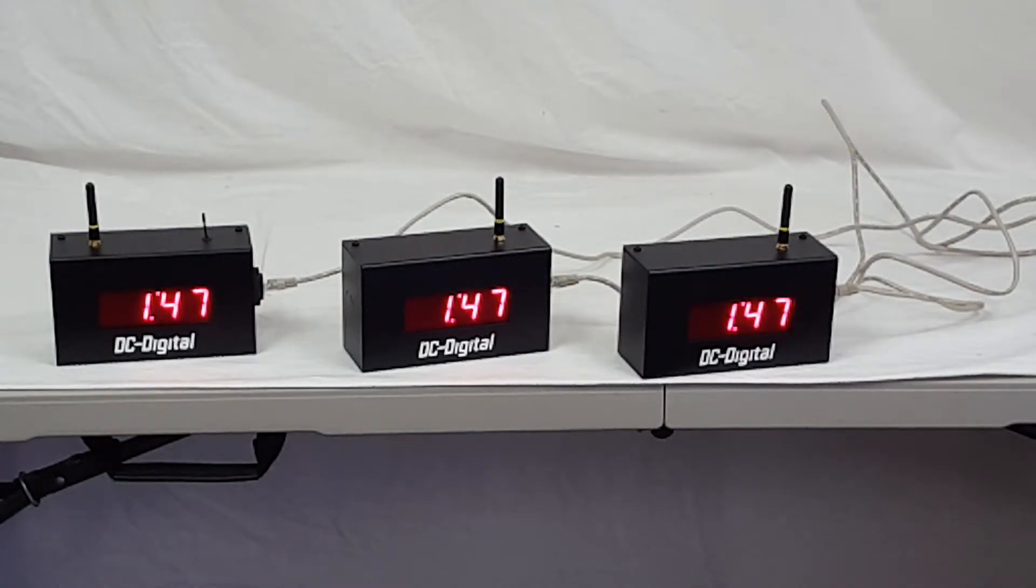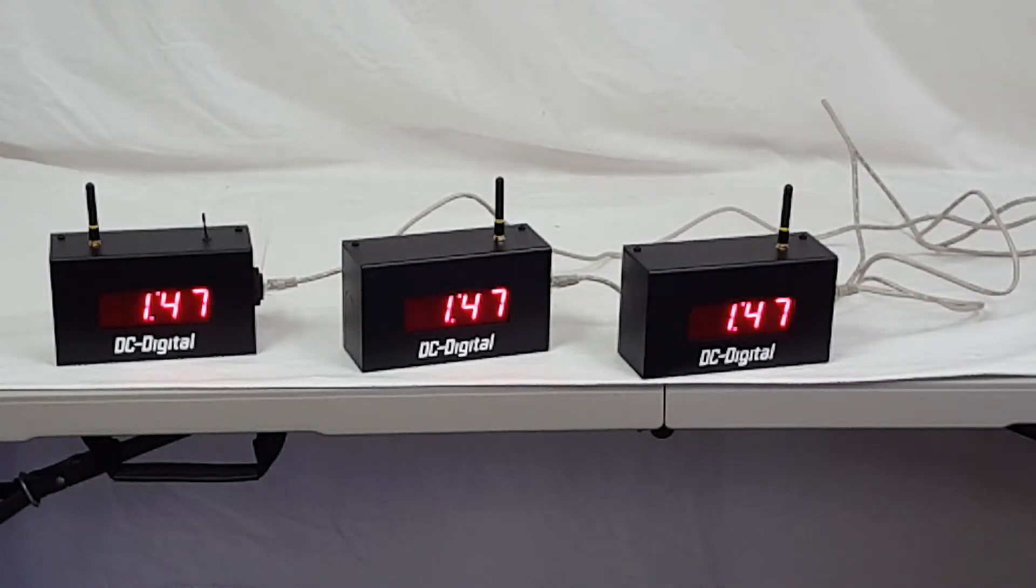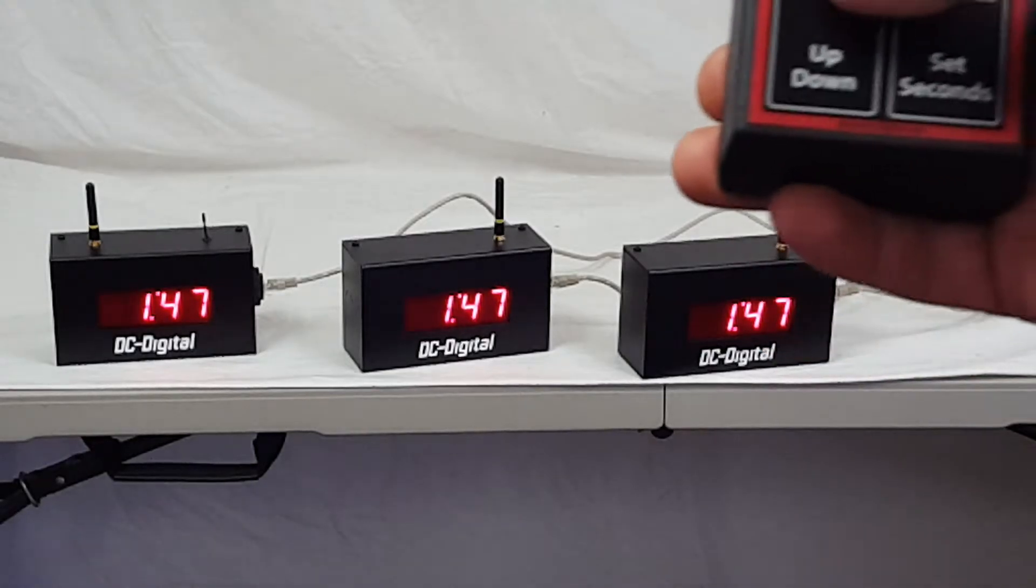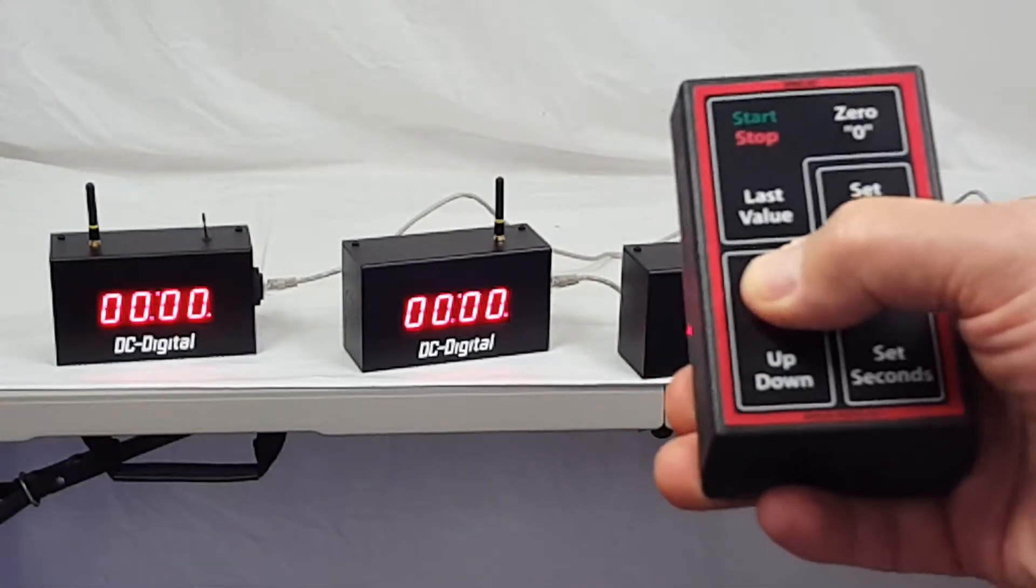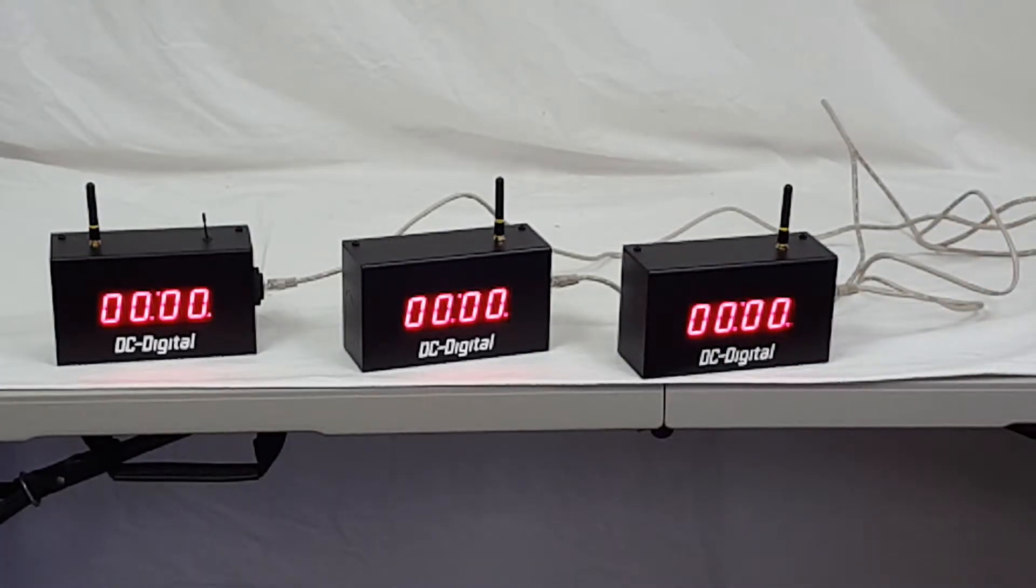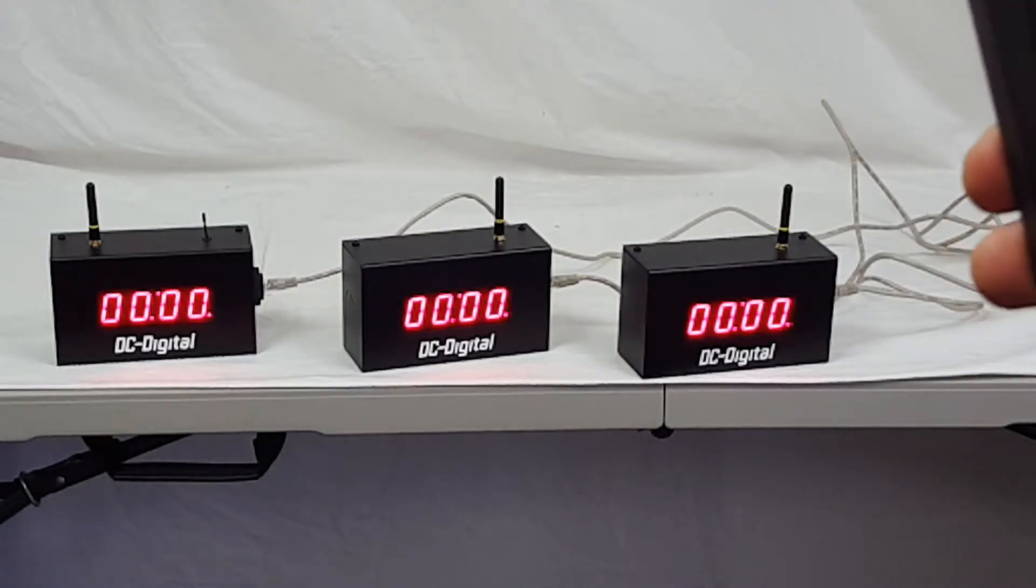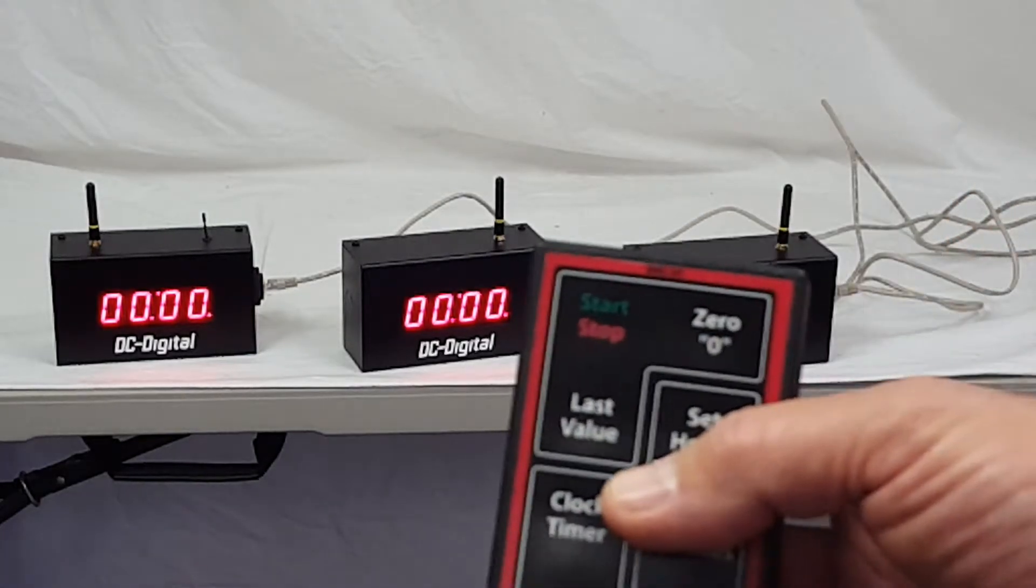I'm going to go ahead and show you the functionality. Right now it's 1:47 in the afternoon, it's time of day. So I'm going to switch it to clock timer. As you can see, it's zeroed out, it's all zeros. The decimal point, lower right decimal point, indicating that it's in timer down mode.